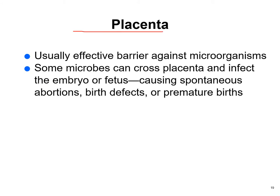The placenta: generally most things don't cross the placental barrier, but some do — listeria and toxoplasmosis are examples. These can cause spontaneous abortions, miscarriages, birth defects, premature births, and brain defects. Many things can go wrong when a fetus gets an infection through the placental barrier.